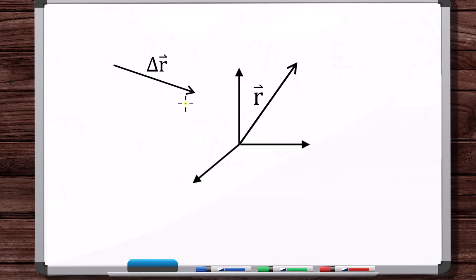With a displacement vector, its job is to locate one point in space relative to another point, not including the origin. So in that case, its tail or its head cannot move.